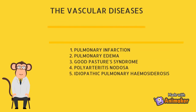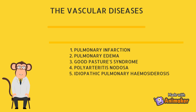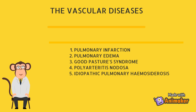Vascular diseases include pulmonary infarction due to embolism or arteriovenous malformation. Pulmonary edema due to elevated left ventricular end-diastolic pressure produces pink and frothy sputum. Goodpasture syndrome involves an association of glomerulonephritis with pulmonary hemorrhage, where immunoglobulin G binds to the glomerular or alveolar basement membrane. Other vascular causes include polyarteritis nodosa and hemosiderosis.